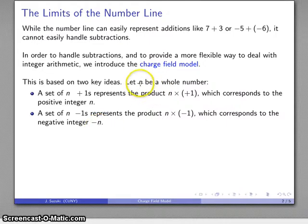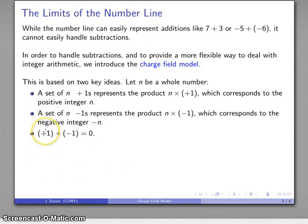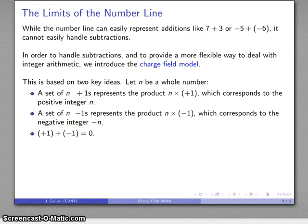An important note: n is assumed here to be a whole number. In general, an expression like this might or might not be positive or negative — it depends on what n is — but here we're assuming n is in fact a whole number. The last key idea in the charge field model goes back to the definition of the additive inverse: if I take plus-one and add its additive inverse, I get zero. In other words, positive and negative units cancel each other out.